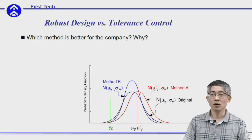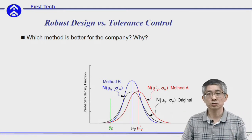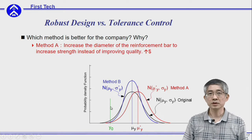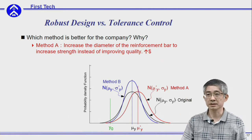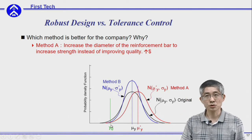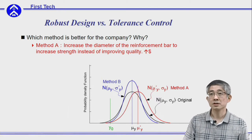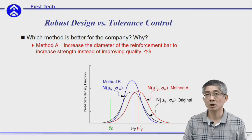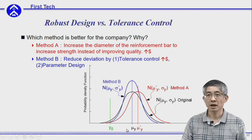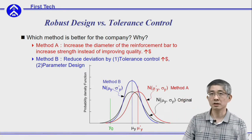Overall, we have discussed two methods to adjust your output distribution to fulfill the strength requirement. The first method is to move the center of the distribution to a larger value to meet the strength requirement; in application this means increasing the diameter of the bar, which increases cost. The second method is to reduce the spread of the distribution rather than move its center, to satisfy the strength requirement.